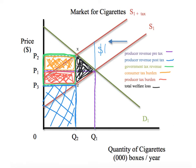You can feel empowered. If you can get this graph — how to make it and the logic of it in your mind — then you will remember the information you need for a proper evaluation and analysis. The logical path through this graph is: producer pre-tax revenue, producer post-tax revenue, government tax revenue, consumer tax burden, producer tax burden, total welfare loss.